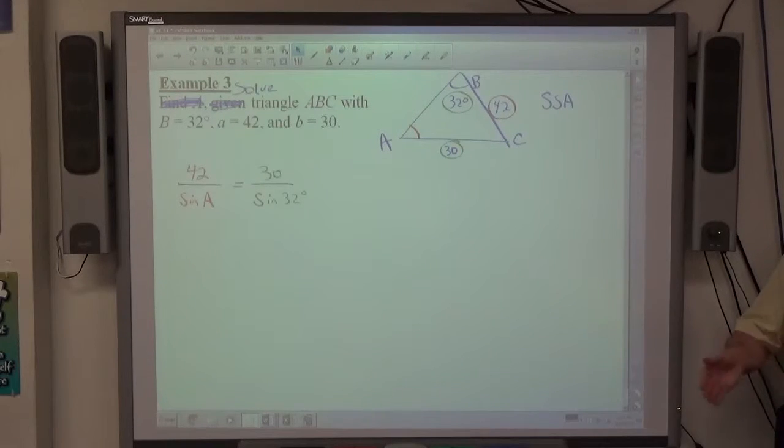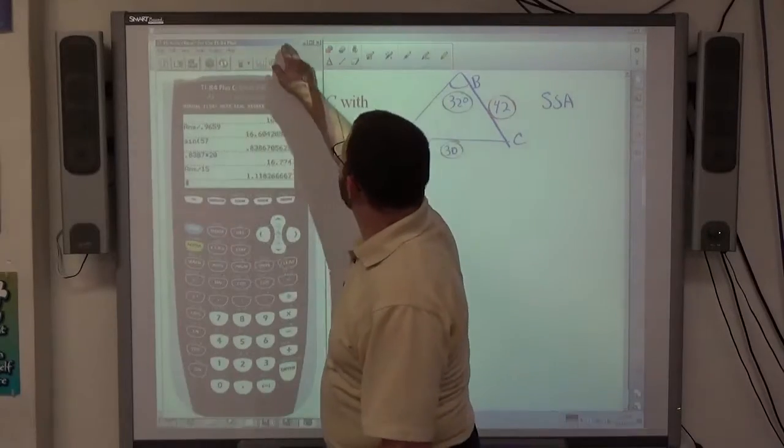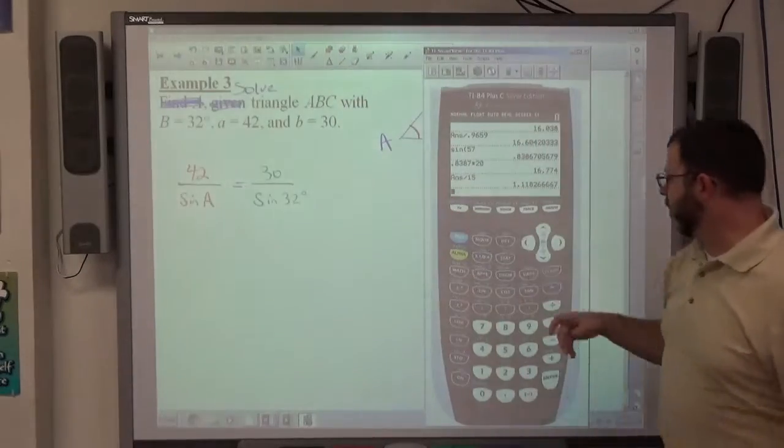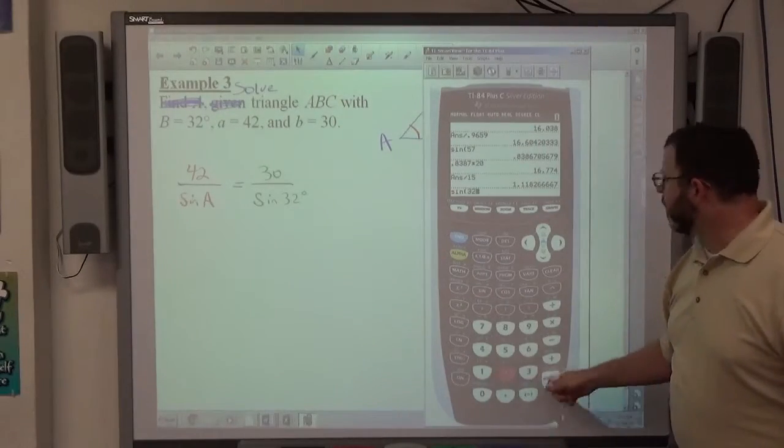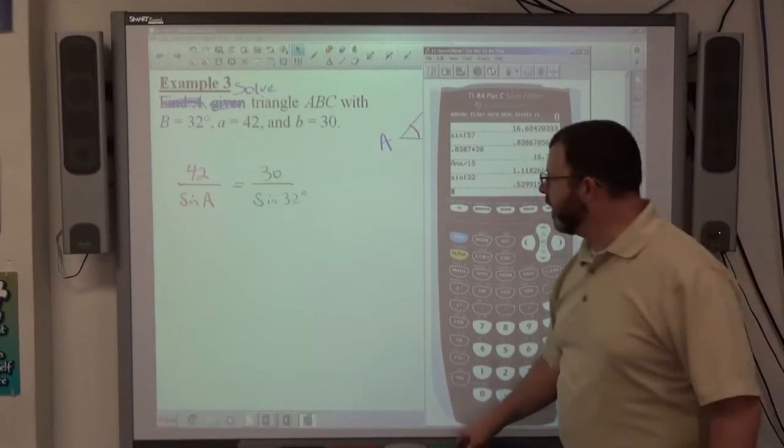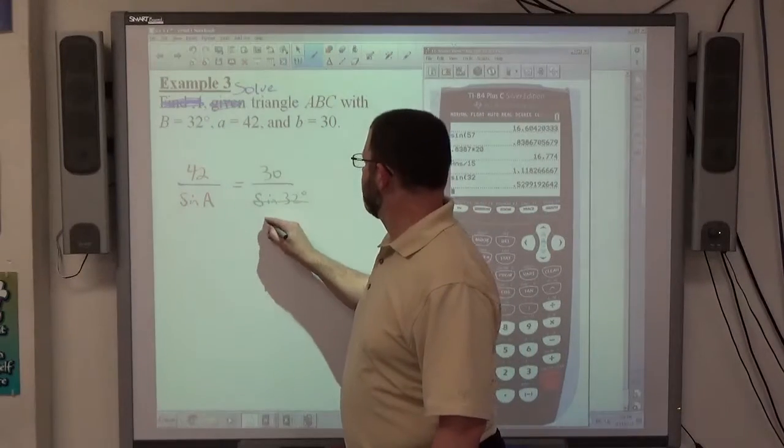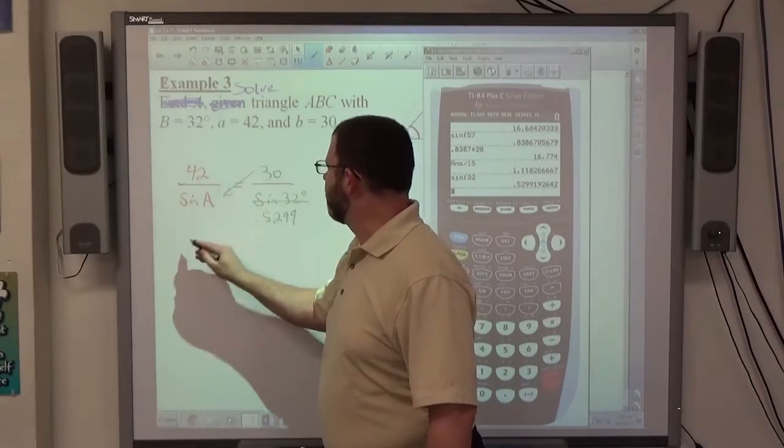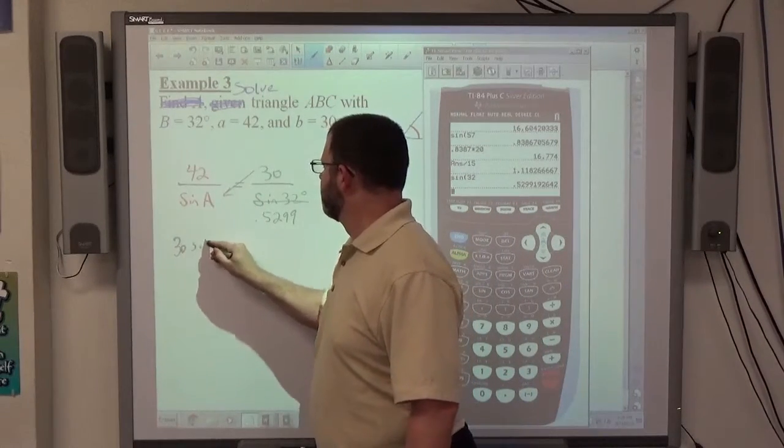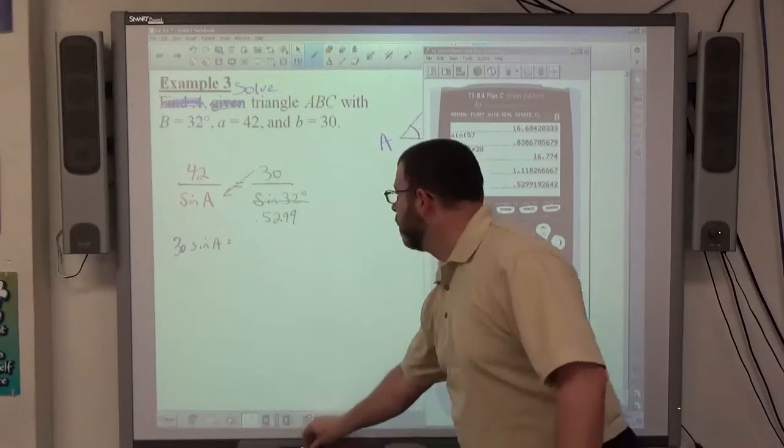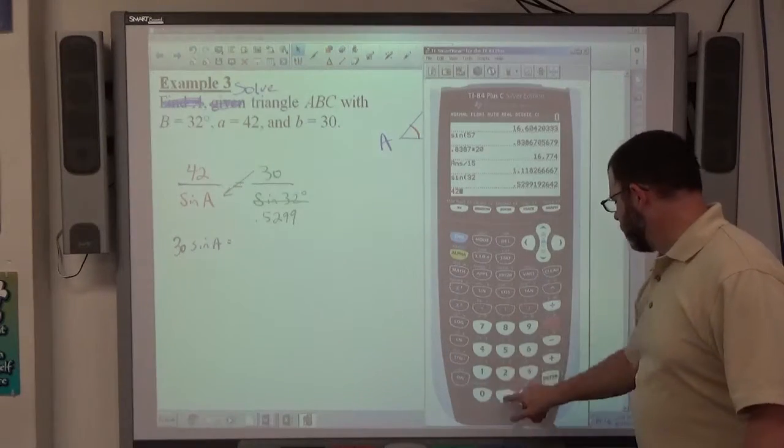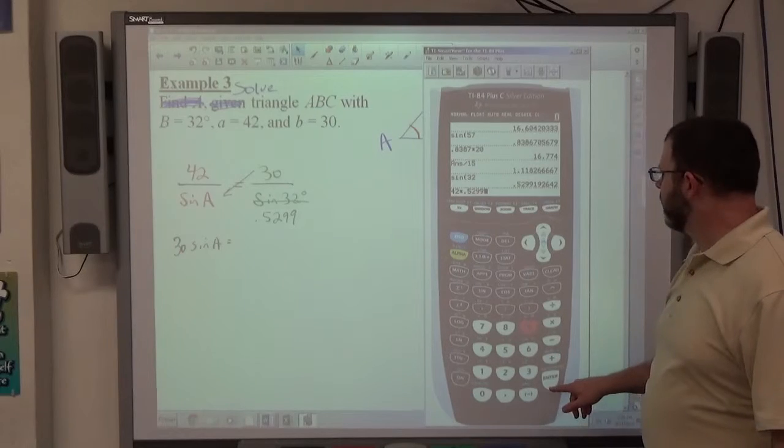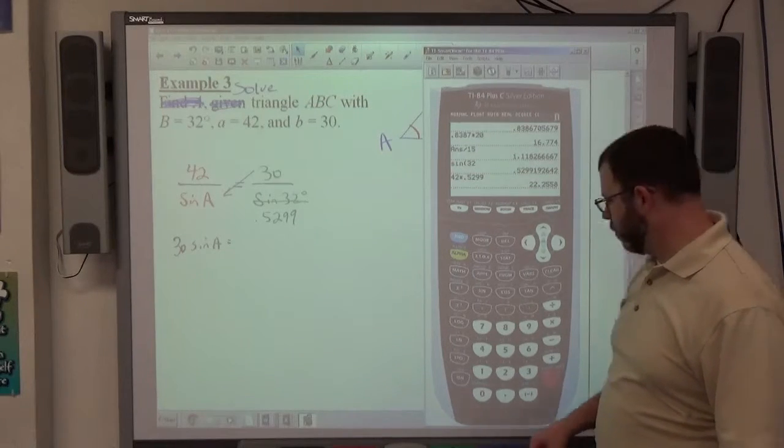If it's possible, you're going to be able to continue on. If not, you put the empty set and you're done. Once again, I'm going to find out what the sine of 32 is here. Go four decimal places, so .5299. Quick little cross-multiply, I'm going to get 30 sine of A is equal to 42 times .5299. That comes out to 22.2558.